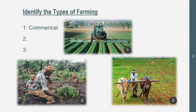This is commercial farming. We see mechanization, we see use of pesticides, we see a good amount of land. We don't see many people here doing labor — we don't see a family or one person. Those are all characteristics of commercial farming.